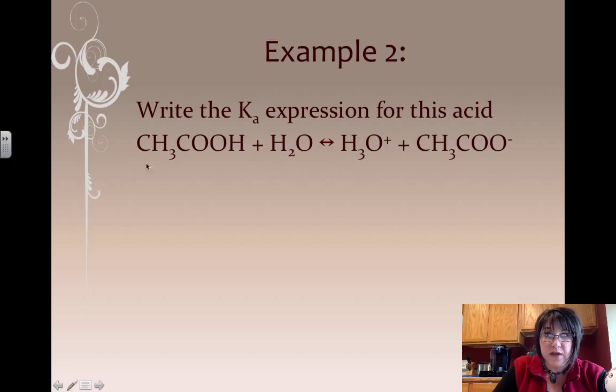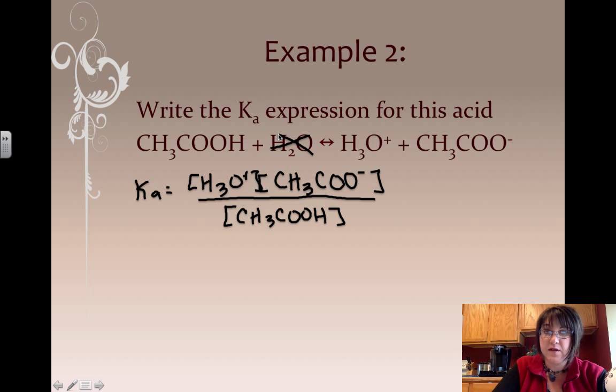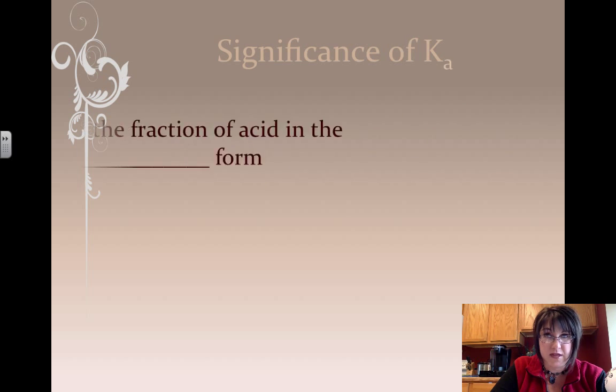When we have a weak acid, we would write the Ka expression the same way. So I put hydronium ions on top, along with the conjugate base of my weak acid, CH3COO. That's called ethanoate. And then my ethanoic acid goes on the bottom, also known as acetic acid. Water doesn't get to be in the expression, because it's a liquid and liquids don't go in equilibrium expressions.